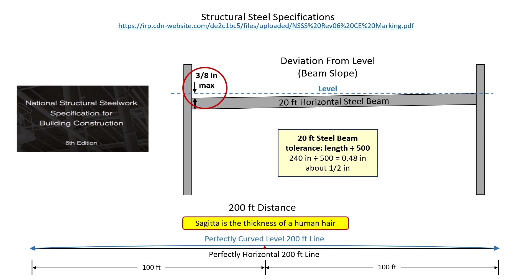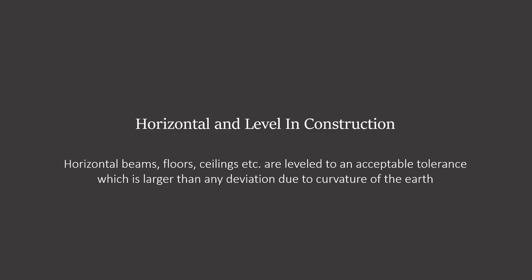Now let's compare that 3/8-inch tolerance for a 20-foot steel beam to the sagitta that's only the thickness of a human hair for a curved level line that is 200 feet long. I think most people understand why we ignore curvature on the vast majority of construction projects. So yes, even in construction, horizontal and level are considered to be the same thing, but we also know that there is nothing that is perfectly horizontal or level.